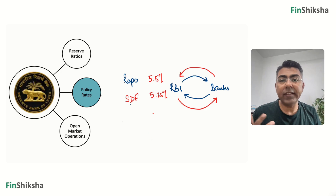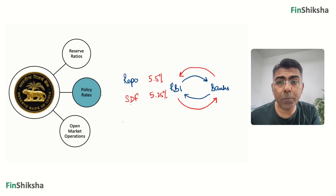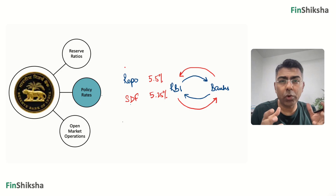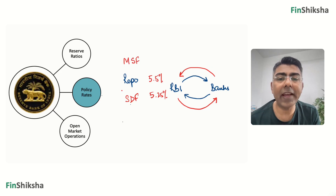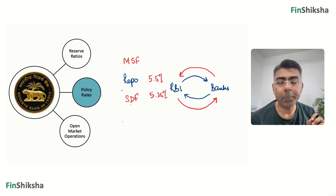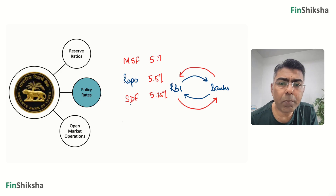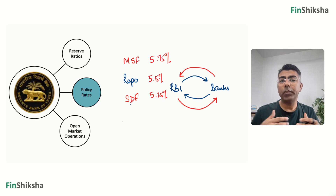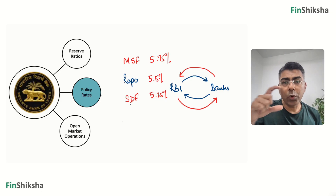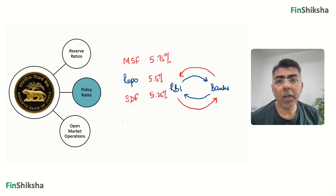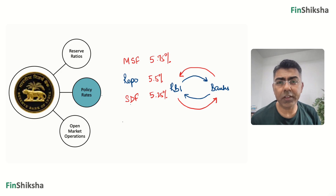Repo does not have an endless supply — banks can only borrow up to a certain percentage of the total deposit base. If a bank needs emergency funding above that limit, there is another rate called MSF, Marginal Standing Facility, at a slightly higher rate of 5.75%. Together, these rates form what's called the policy corridor under the Liquidity Adjustment Facility, and when RBI changes them, the entire corridor shifts accordingly.